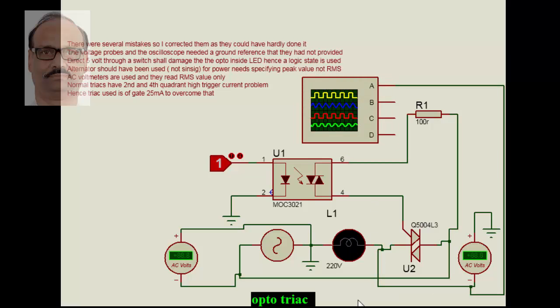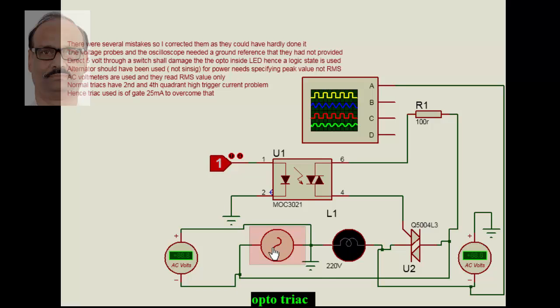We're taking a ground reference here so that everything is connected across the ground reference. Even the oscilloscope is also connected to this point which also works with ground reference. This ground and this ground can be separate, but for simulation we are showing it as same ground. Instead of a switch we have taken a logical input; it can be zero or it can be one.